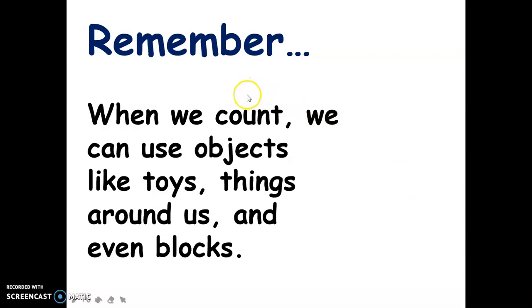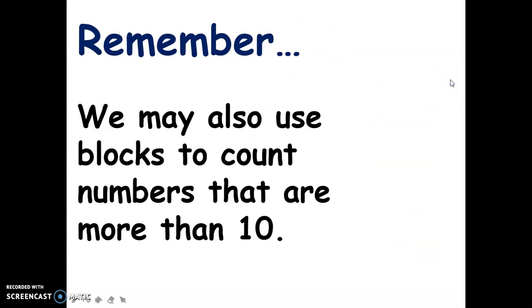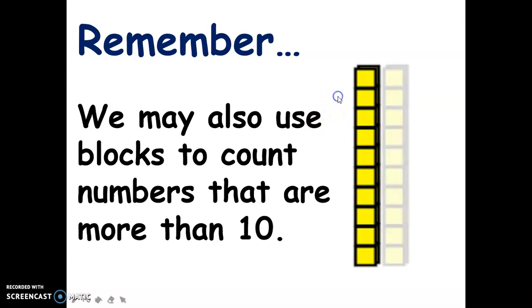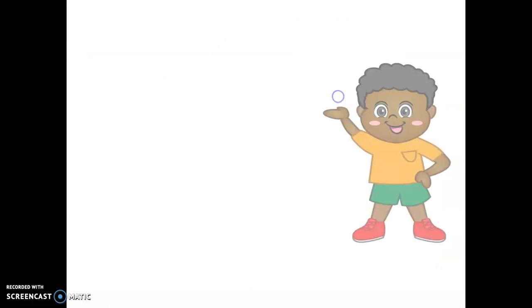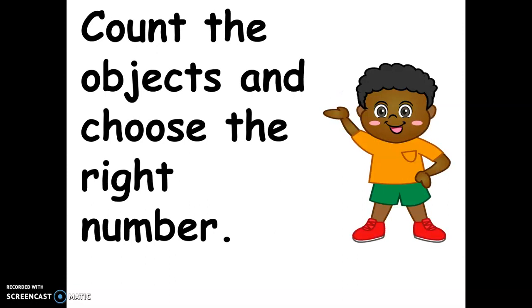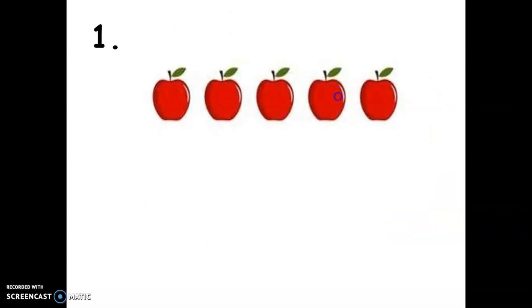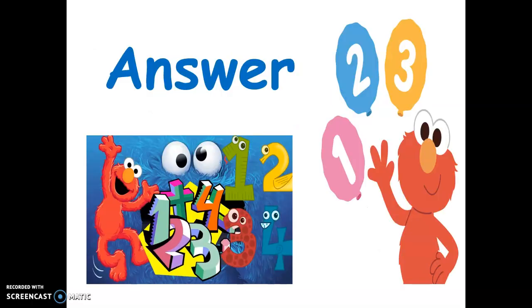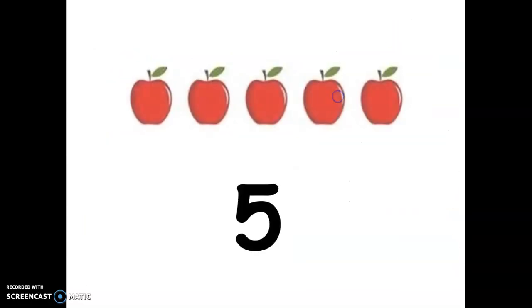Remember that when we count, we can use objects like toys, things around us, and even blocks. We may also use blocks to count numbers that are more than ten. Now let's have some brain exercise — let us count the objects and choose the right number. For number one, we have apples — how many are there: five, six, or seven? The answer is five apples.